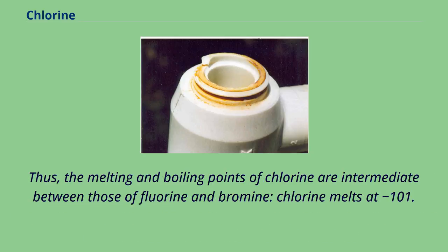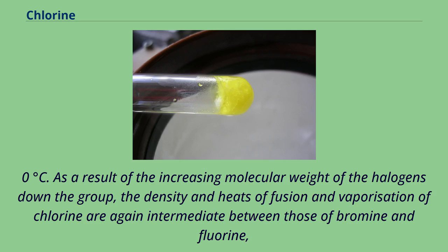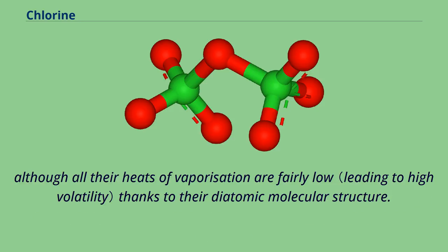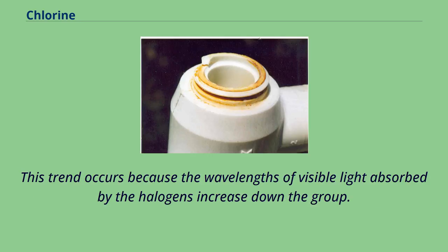Thus, the melting and boiling points of chlorine are intermediate between those of fluorine and bromine; chlorine melts at −101.0°C and boils at −34.0°C. As a result of the increasing molecular weight of the halogens down the group, the density and heats of fusion and vaporization of chlorine are again intermediate between those of bromine and fluorine, although all their heats of vaporization are fairly low thanks to their diatomic molecular structure. The halogens darken in color as the group is descended; thus, while fluorine is a pale yellow gas, chlorine is distinctly yellow-green. This trend occurs because the wavelengths of visible light absorbed by the halogens increase down the group.